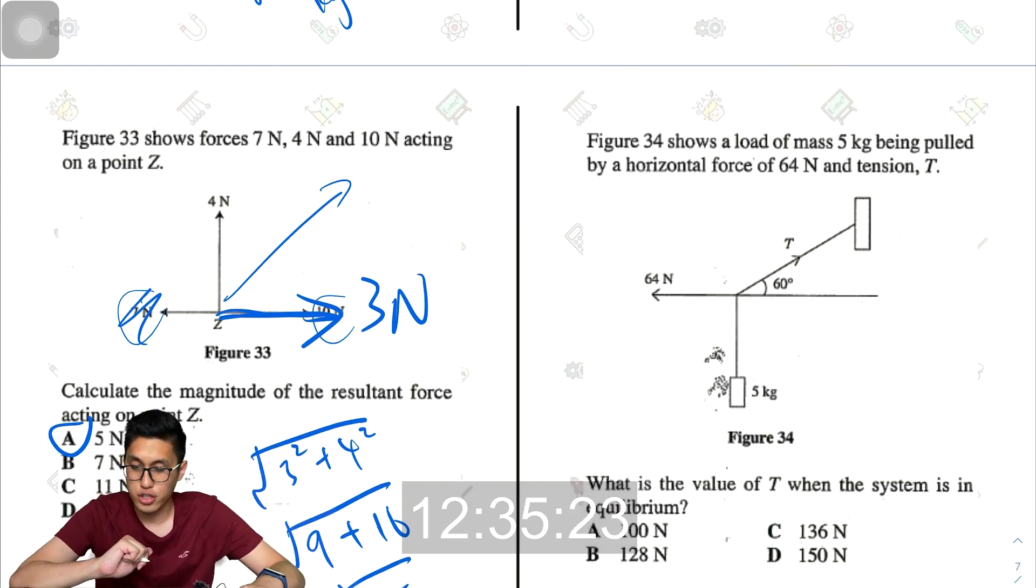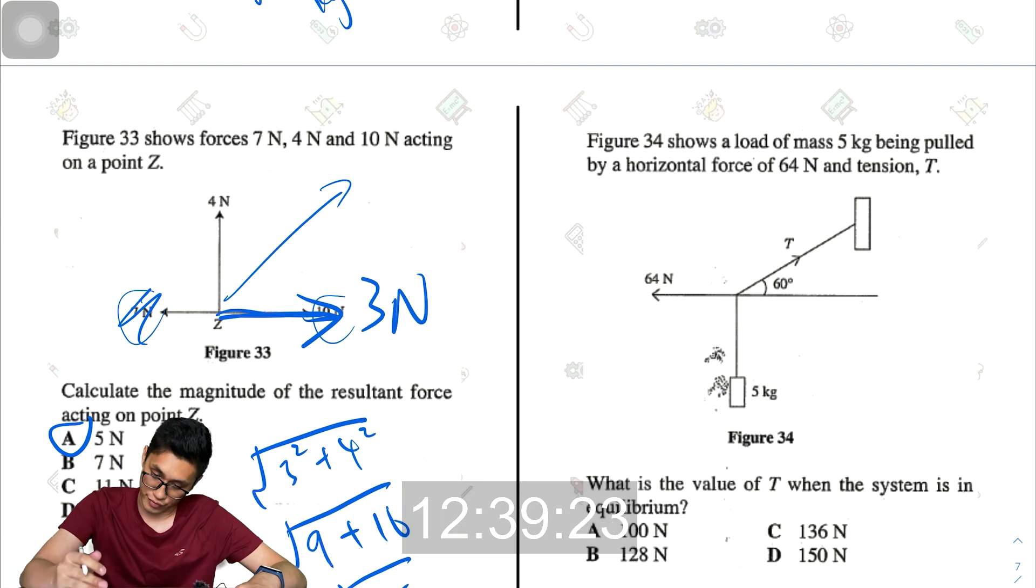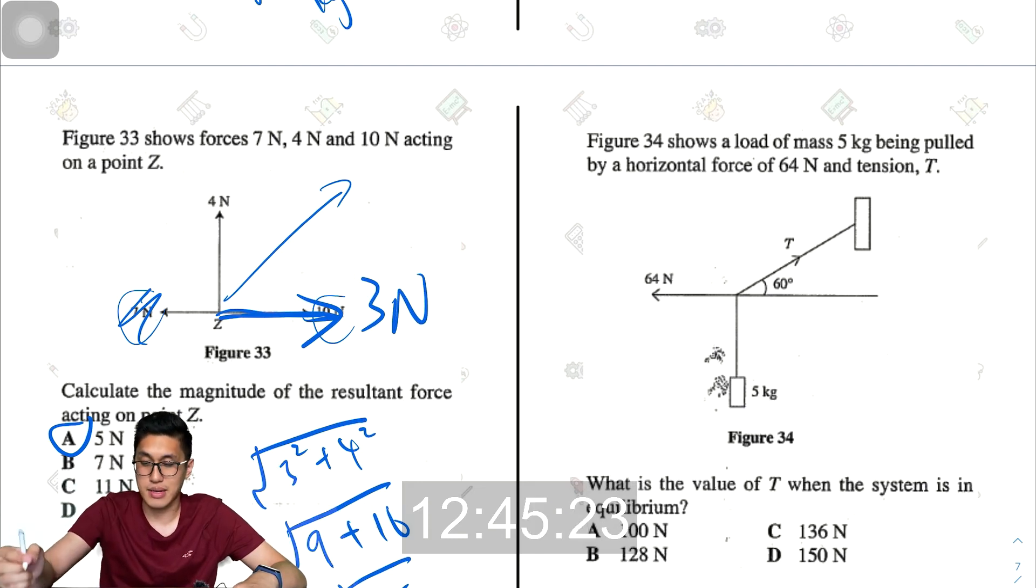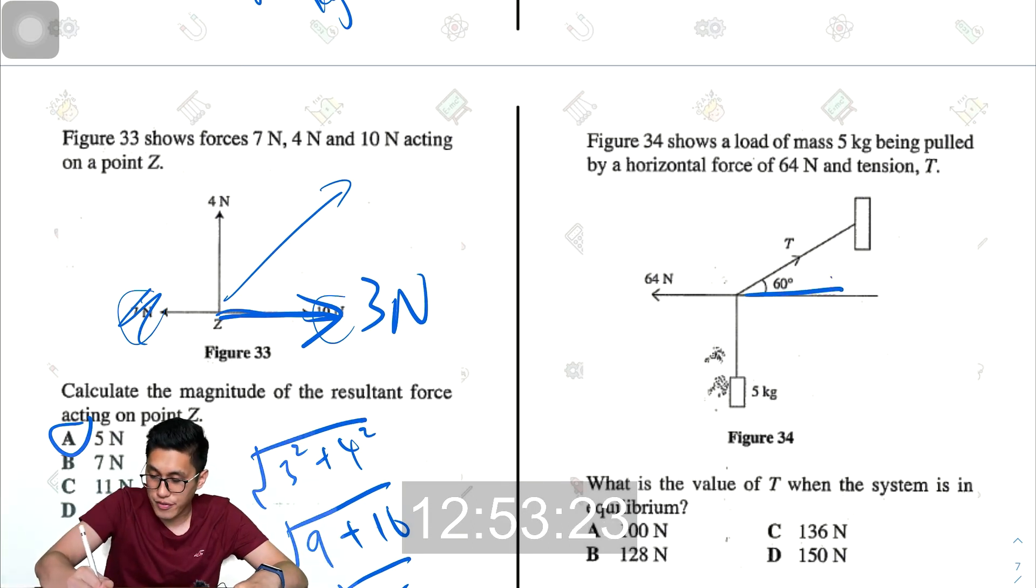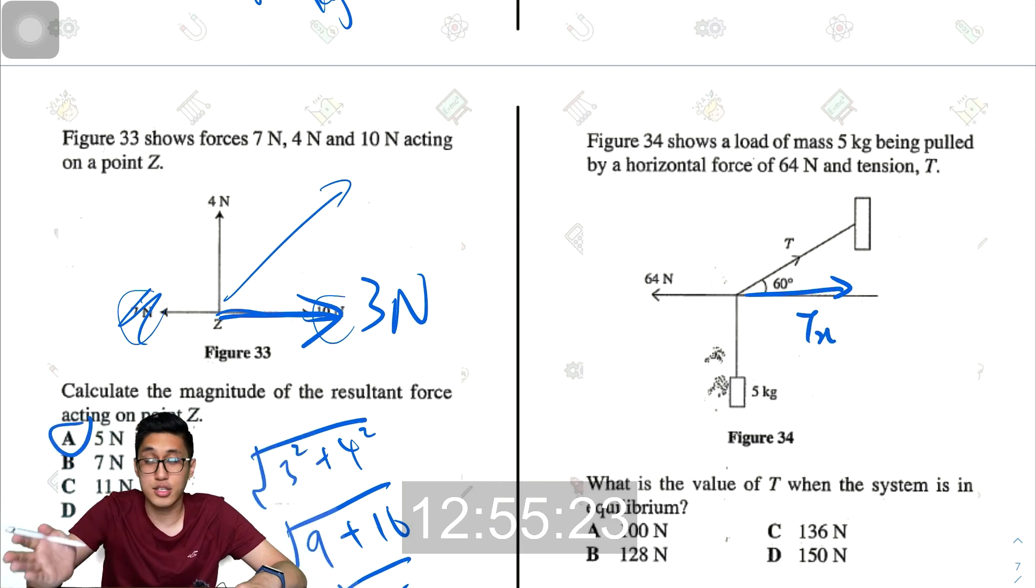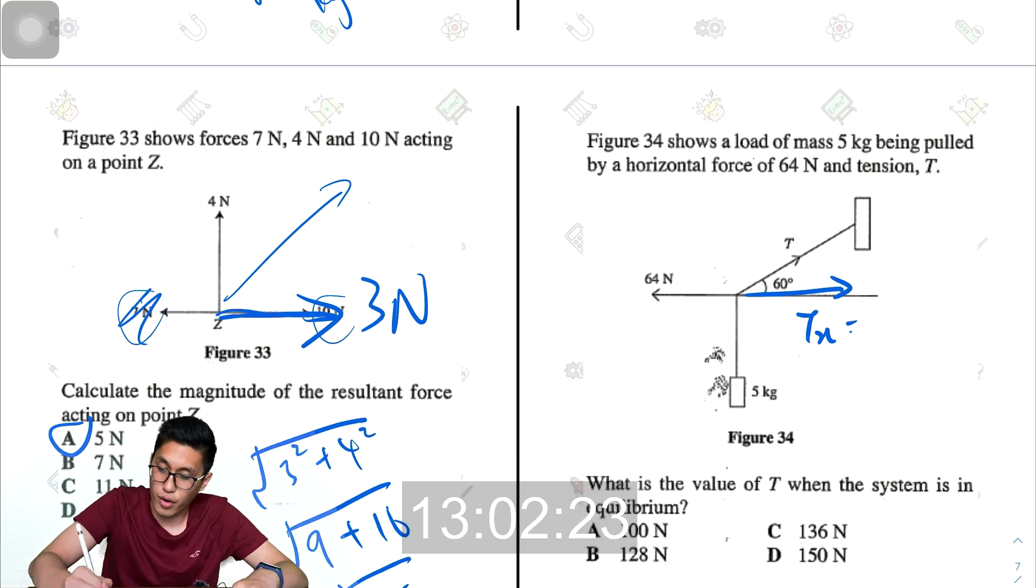For this, figure 34 shows a load of mass 5 kg, being pulled by a horizontal force of 64 newtons and tension T. So what is the value of T when the system is in equilibrium? So I will choose to resolve the horizontal forces. I know that the horizontal component of tension must be the same as the horizontal force on the other side, which is 64 newtons.